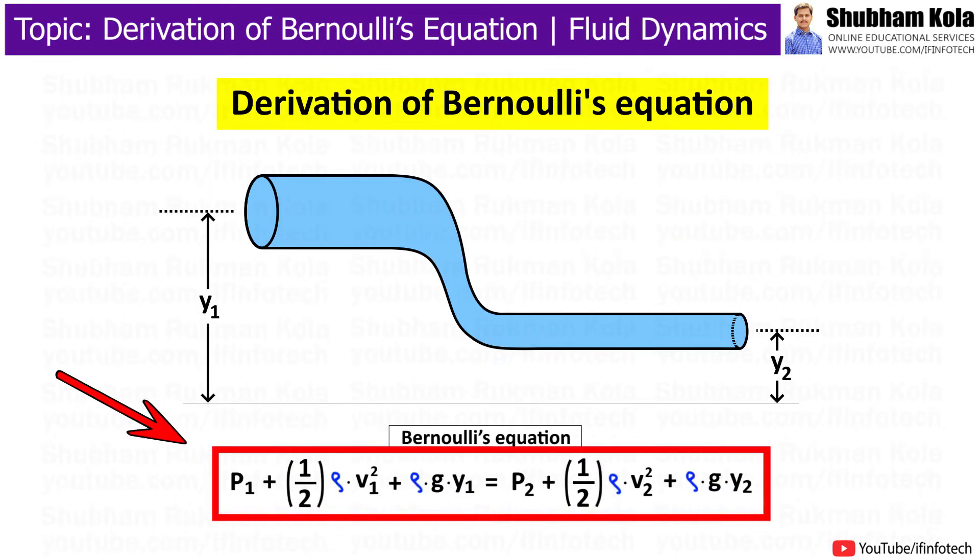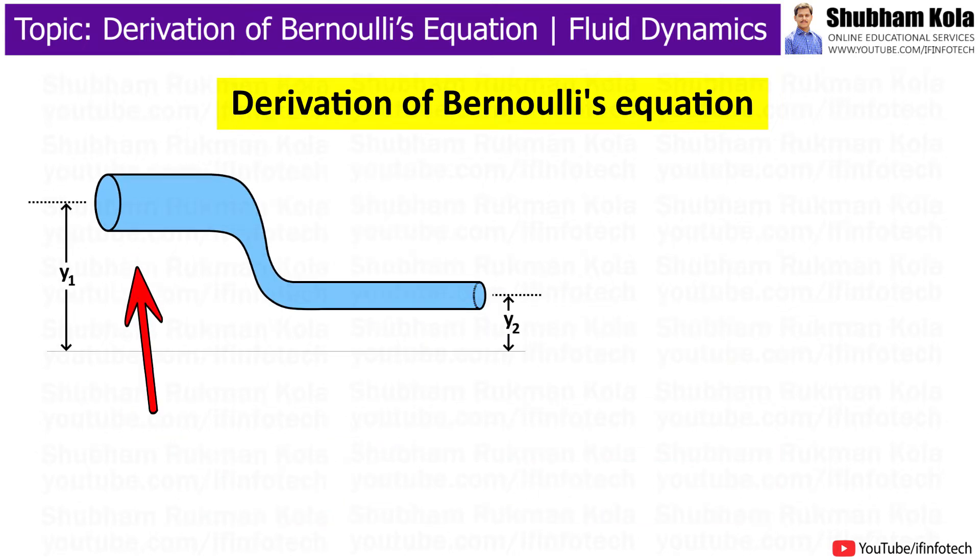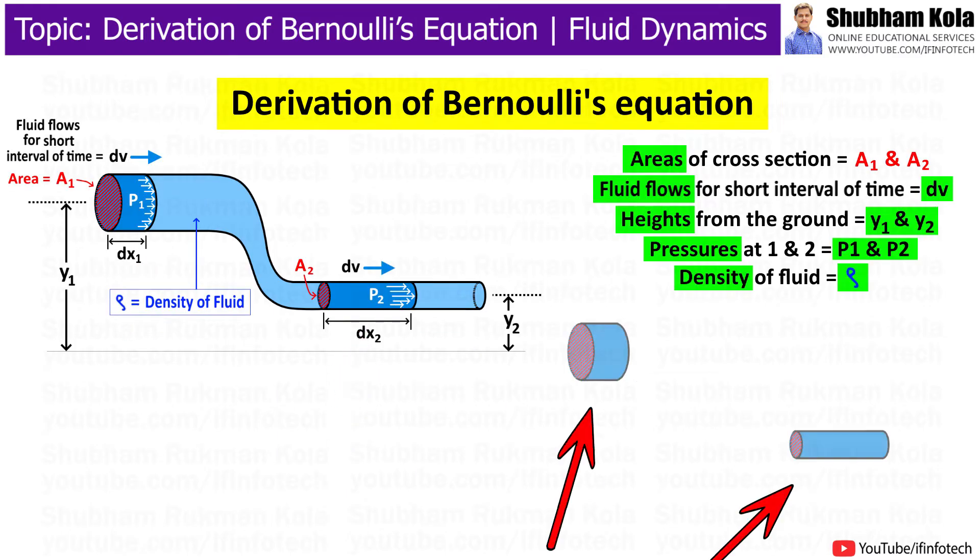Now, we will see how to derive Bernoulli's equation. Consider a pipe with varying diameter and height through which an incompressible fluid is flowing. Let's assume the energy system we are considering is composed of volumes of water 1 and 2 as well as all the fluids in between those volumes.